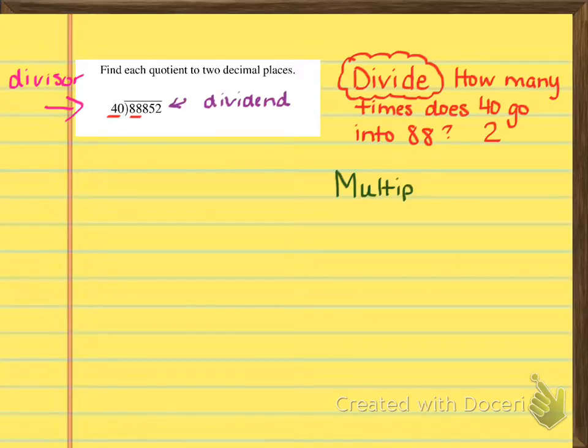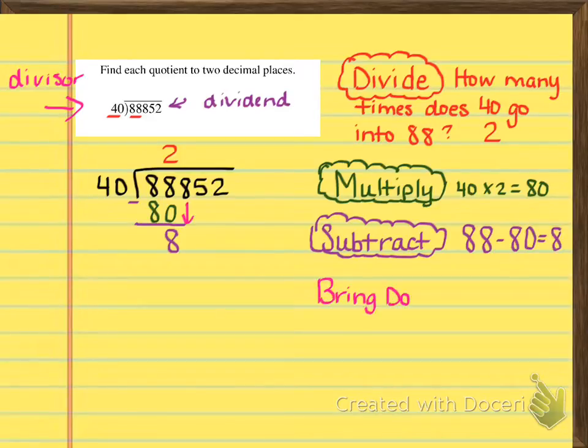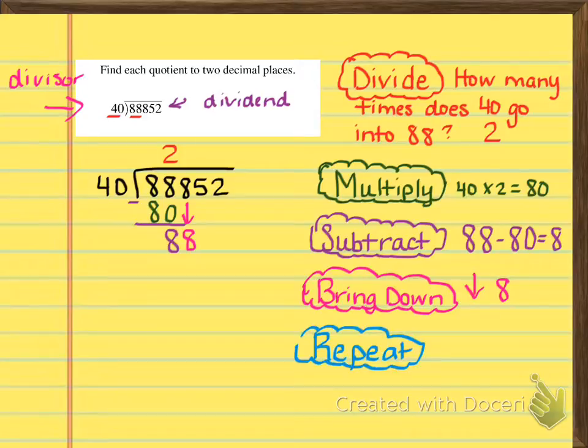So we're going to go ahead and multiply. 40 times 2 is going to give us 80. Now we get the 80. Then we're going to subtract. 88 minus 80 is going to give us 8. And then we're going to bring down. So then we'll bring that second 8 down. And then we repeat.